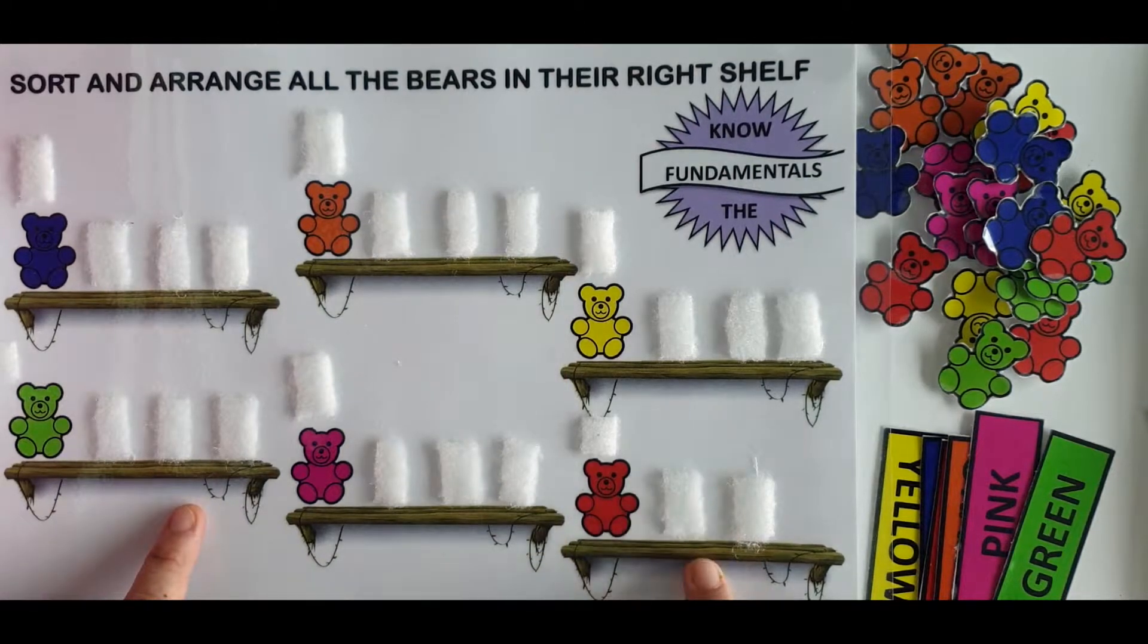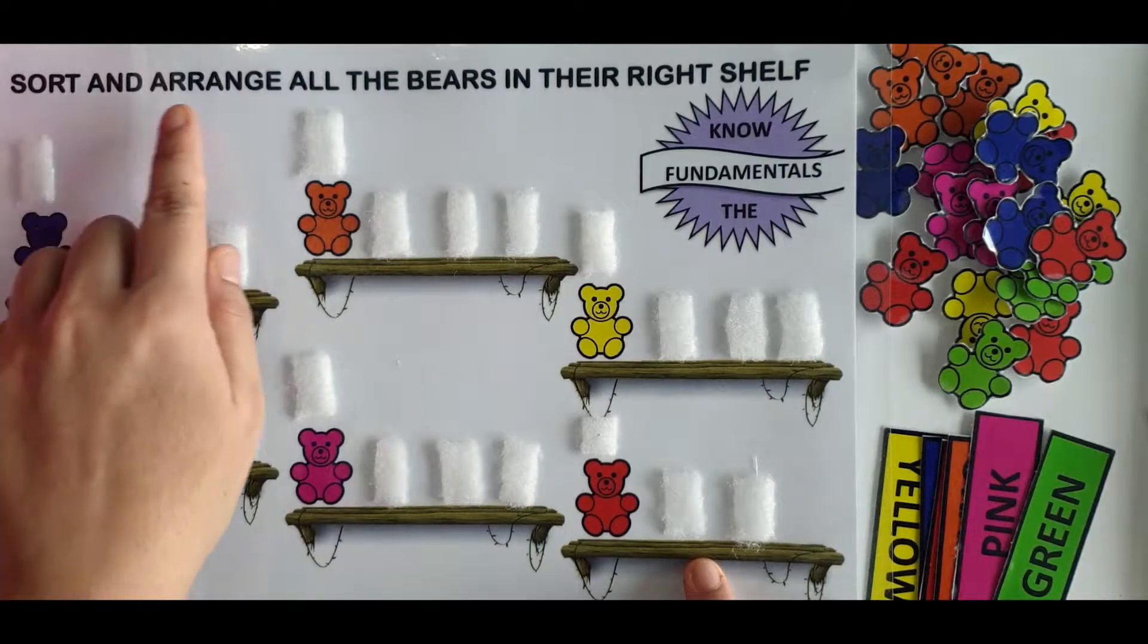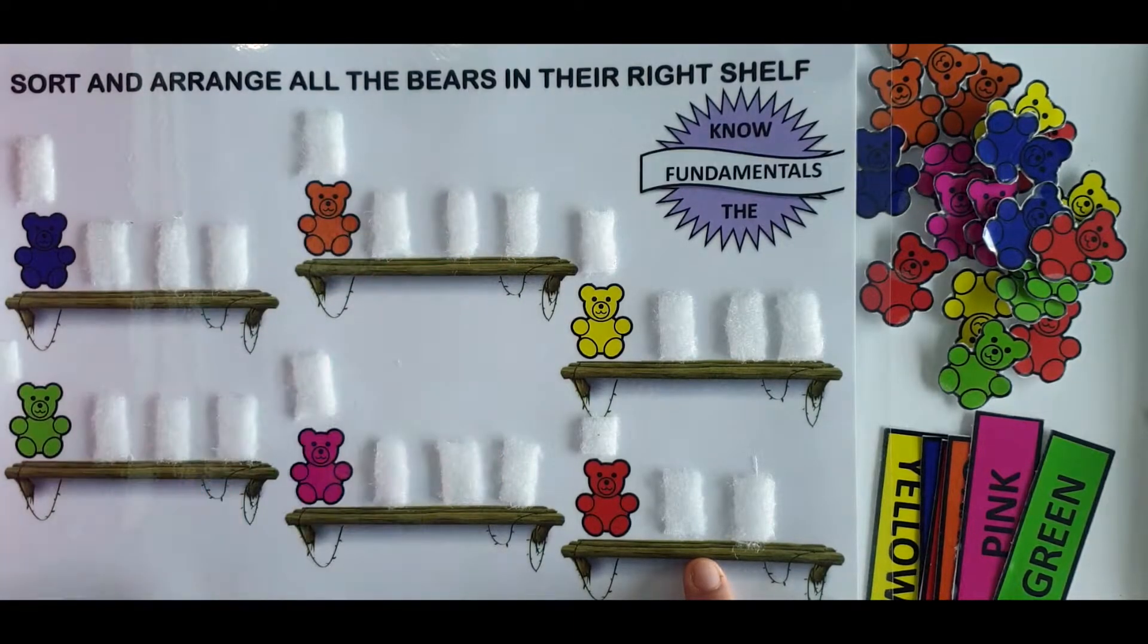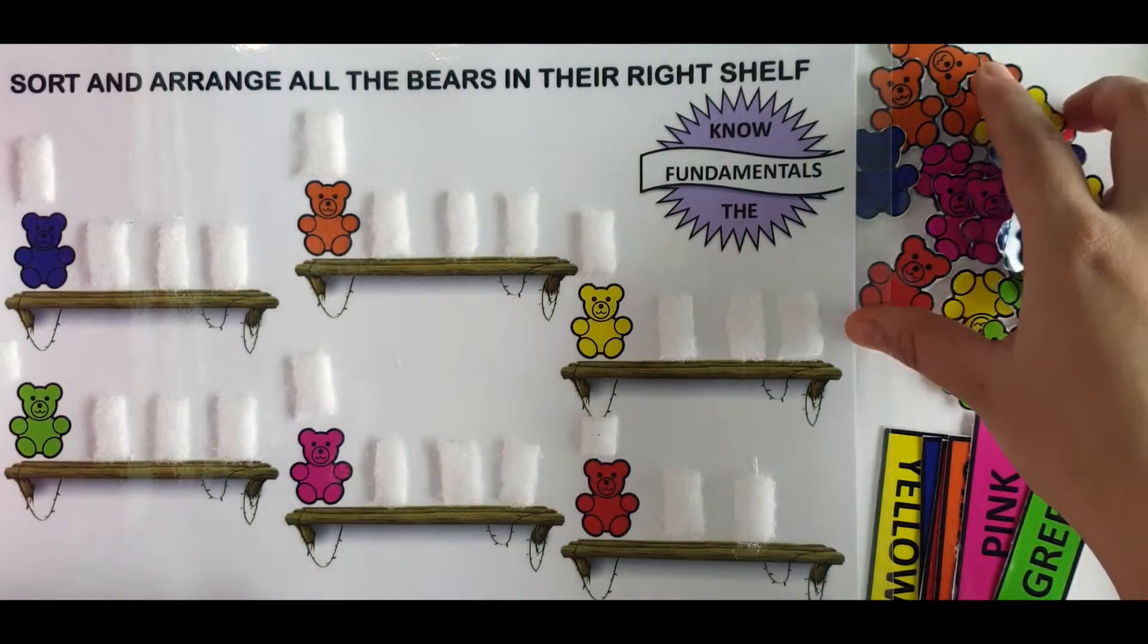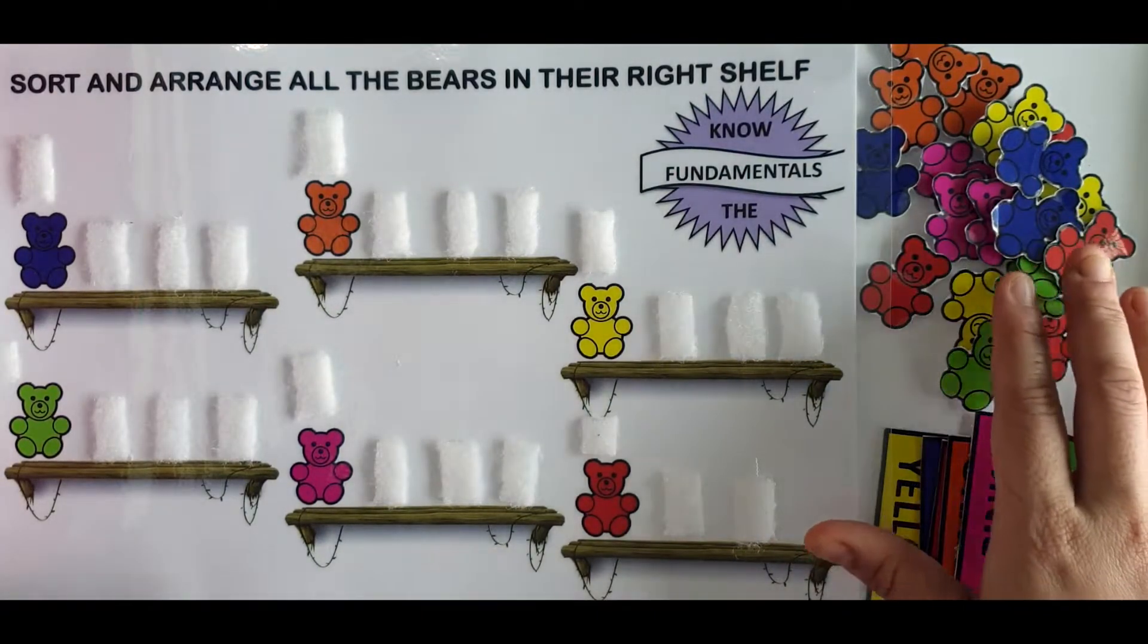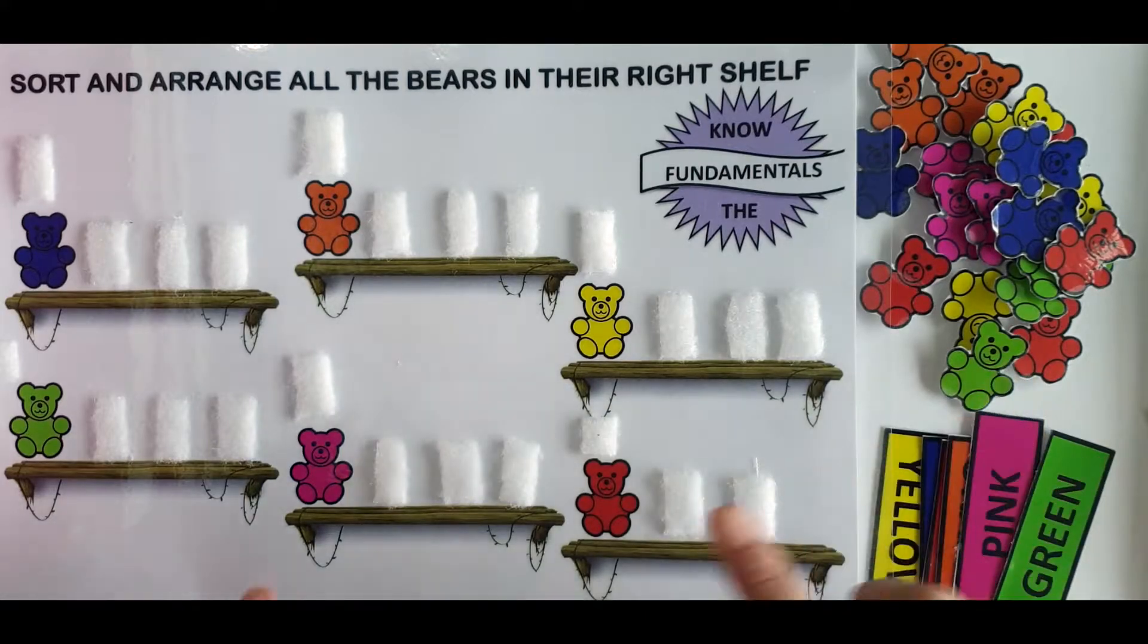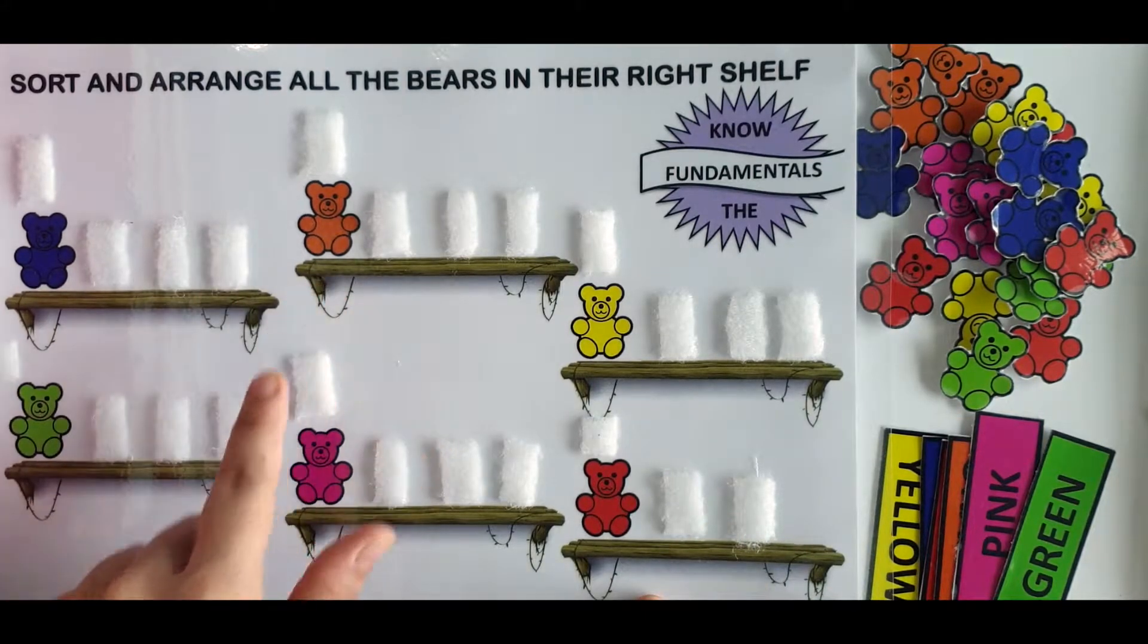So this is activity number one. It says sort and arrange all the bears in their right shelf. So we gave the kids a bunch of bears which were of different colors and they have to sort and arrange the bears in the right shelf.